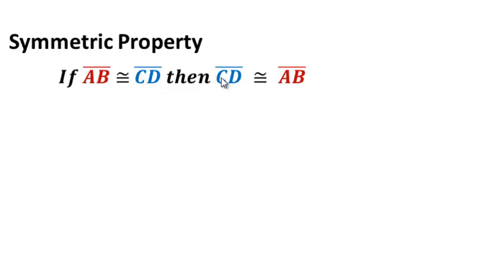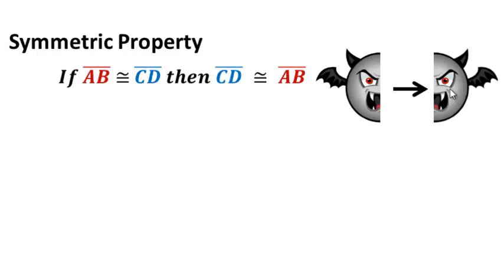And we have CD and then AB on this side. So if we're going to again apply it to a picture, think of it as if we have a scary bat face, then it would be congruent to the same scary bat face, but just flipped. And applying that to angles, if we have a red angle and it's congruent to a blue angle, well then if we just reverse it, we're going to use the same colors, but it would just be that the blue is congruent to the A. Again, just flipped.